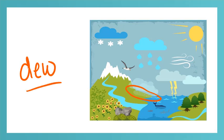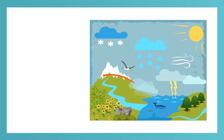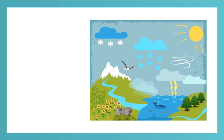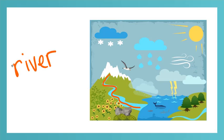Then here we have the mountain. M-O-U-N-T-A-I-N. Mountain. When the temperature gets warmer, the snow on top of the mountain melts and it comes down the mountain in what's called a river. R-I-V-E-R. River.